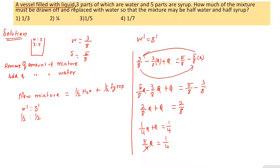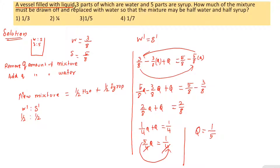That is the first solution. The 1 by 5th value — that is the water added. The parts convert: 3 is to 5, and water and syrup will be in the same ratio. The answer is 1 by 5th of the total mixture.